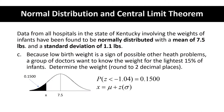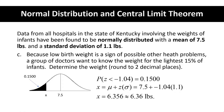Using our formula, x equals mu plus z times sigma — this is the z-score formula rearranged in terms of x. Plugging in what we know: the mean is 7.5, the z-score is negative 1.04, and sigma is 1.1. Multiplying before we add, we get x equal to 6.36 rounded off. This corresponds with our picture because we knew x had to be less than 7.5.